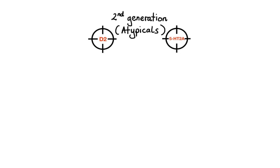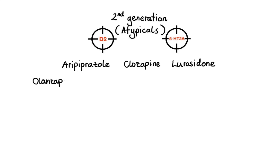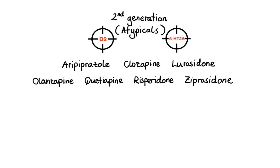Examples of atypical antipsychotics are aripiprazole, clozapine, lurasidone, olanzapine, quetiapine, risperidone, and ziprasidone. In addition to dopamine and serotonin 2A receptor blockade, atypical antipsychotics also bind to many other targets including other subtypes of serotonin receptors as well as histamine, alpha-adrenergic, and muscarinic receptors. As a result, the side effects of second-generation agents can vary depending on the drug's receptor binding profile.